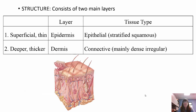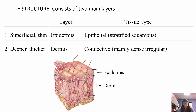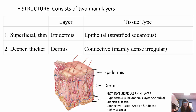We have two main layers: the epidermis and the dermis. The epidermis is the superficial thin layer on top, made up of epithelial tissue — specifically stratified squamous epithelial tissue. The dermis is the deeper, thicker layer made up of both areolar and dense irregular connective tissue. That bottom layer used to be called the hypodermis, but since it's not an actual part of the skin, it's now referred to as the subcutaneous layer, made up of adipose tissue.